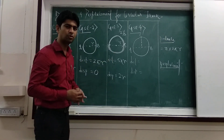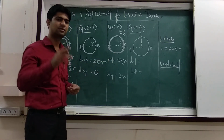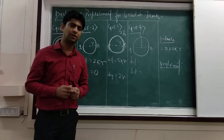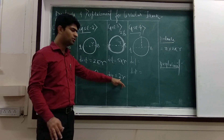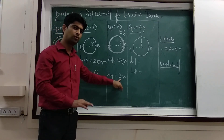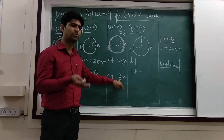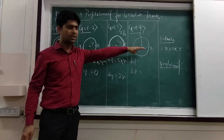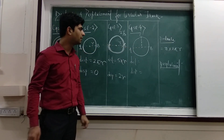Whatever number of revolutions you get — 2 and a half, 3 and a half, 4 and a half — if at the end you are completing a half revolution, the displacement will be 2r. Whether it is 5 and a half, 7 and a half revolutions, the displacement will always be 2r. For distance there is no issue — just use the general formula n into 2πr.